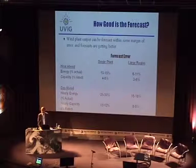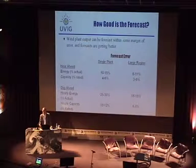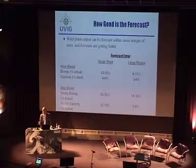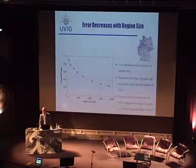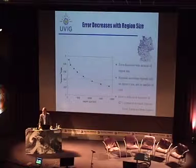Looking at forecast error trends: going from a single plant to a large region, the forecast error decreases significantly. Going from day-ahead to hour-ahead, forecast accuracy improves significantly. The power system world didn't always appreciate this, but as operators understood it, it certainly affected how they used forecasts. Ulrich Focken from Energy and Meteo showed the decrease in forecast error going from a single plant to an area about 1,000 kilometers in size like Germany, with error reduced to 42% of the single-plant forecast over a large region.